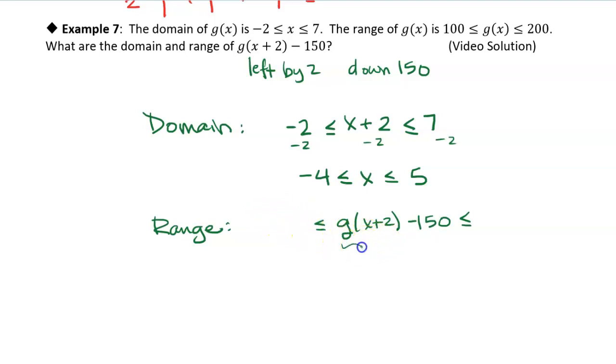So this is going to be between 100 to 200, and then we're subtracting 150 from it. So if we subtract 150 from the low end, we get a minus 50. And if we subtract 150 from the high end, we get 50. So the range of this new function is between minus 50 and 50.